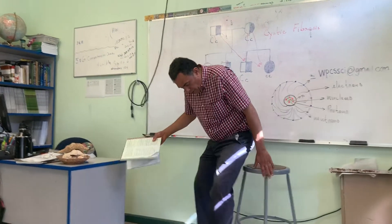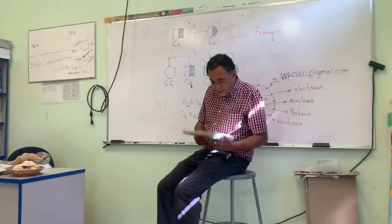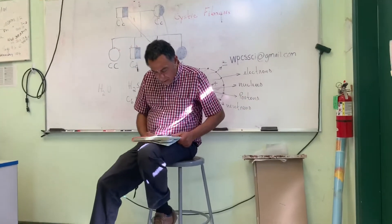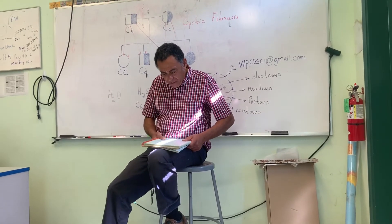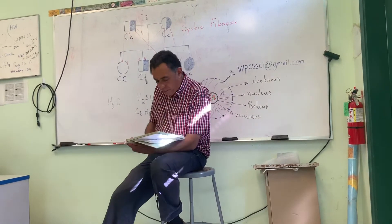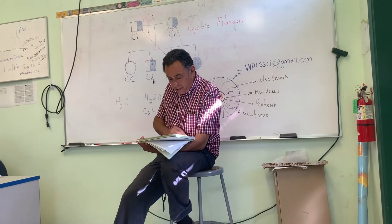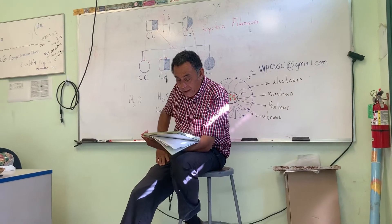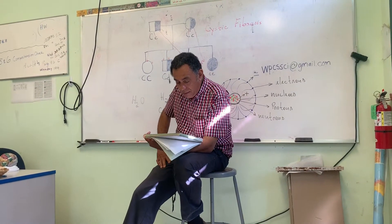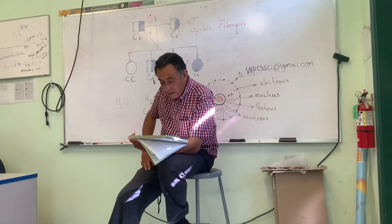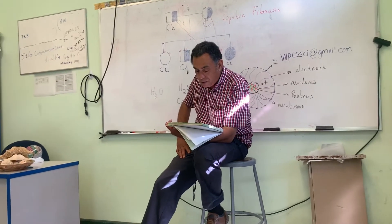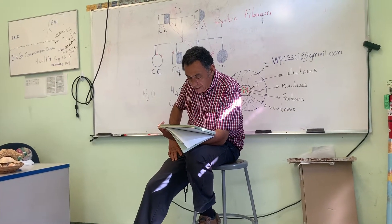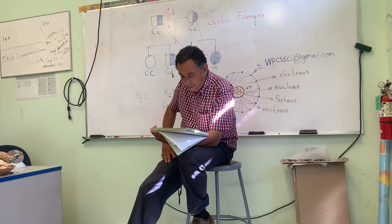Okay guys, let us go here and correct this homework. It's 7 to 12. It's a very nice homework, one of the most beautiful homework. Okay, 7 to 12. Describe how spiders produce silk. Produce silk.